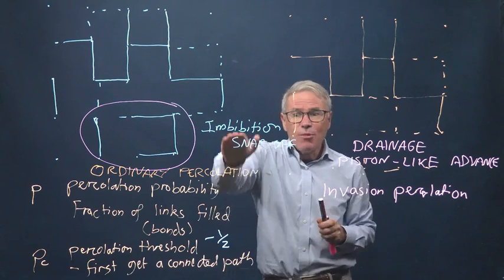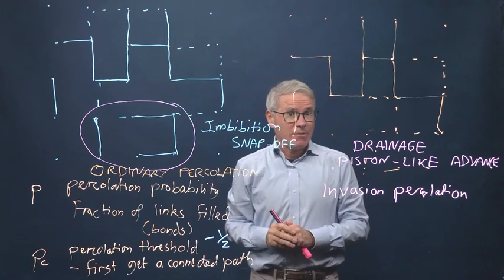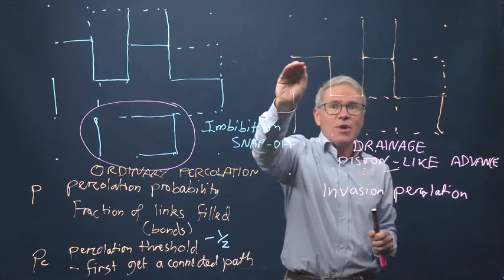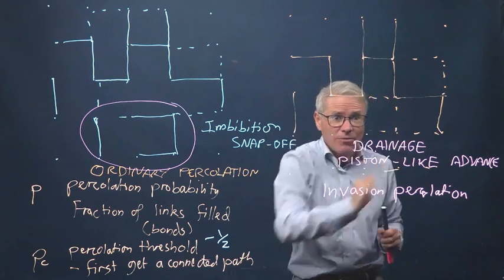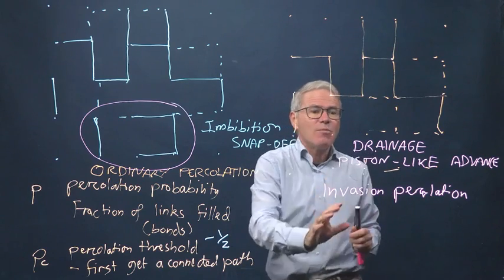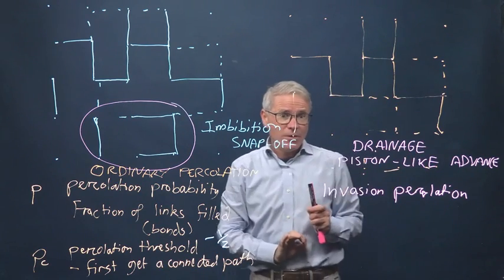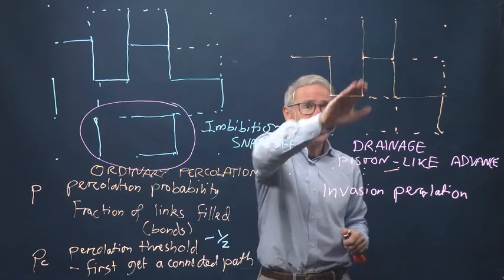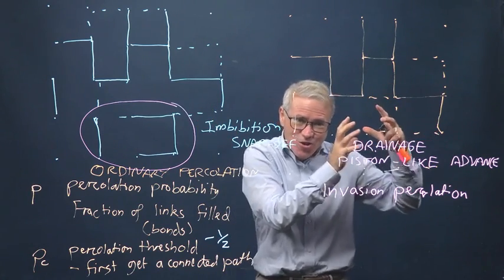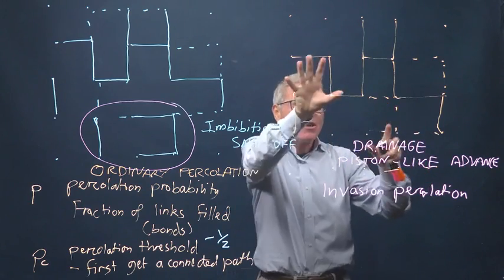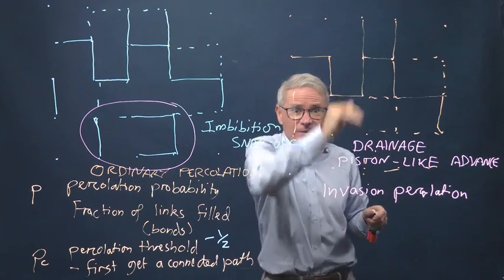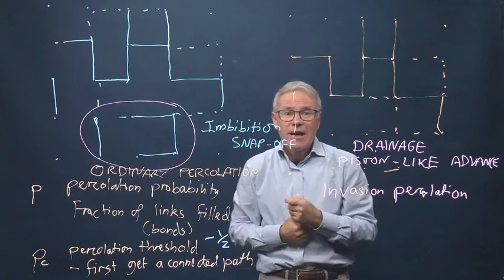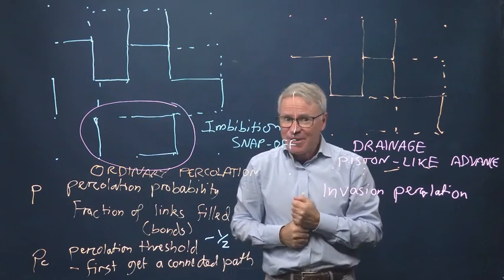and that's a good model of imbibition. Drainage with piston-like advance is invasion percolation, and this has big consequences for flow. This basically gives you connection and good connectivity, good flow at a relatively low saturation of the phase that's invading. Ordinary percolation on the other hand holds back the phase that's invading and has a lower flow. Thank you very much.